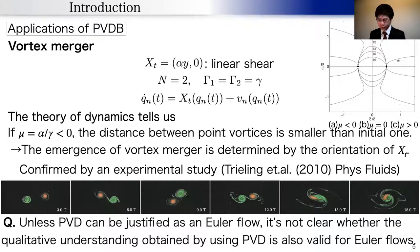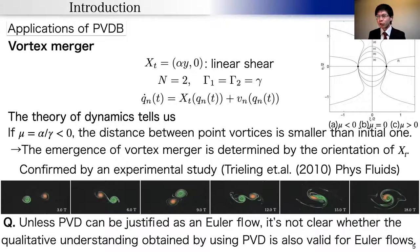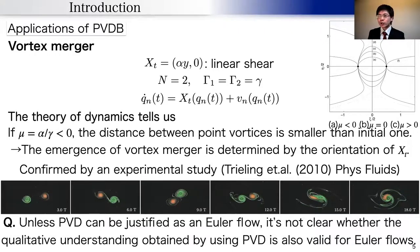Understanding vortex merger is important for gaining insight into two-dimensional turbulence. As a simplified model, point vortex dynamics in background fields gives results that differ depending on the sign of parameter mu. In the negative case, the distance between two point vortices is smaller, which implies vortex merger is expected to occur. In the photo, we see a snapshot of the rectangular tank rotating so that mu is negative, showing how they approach each other.